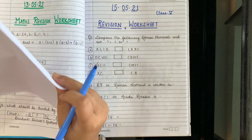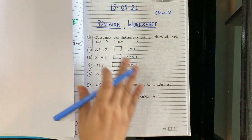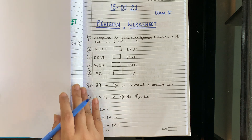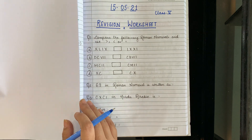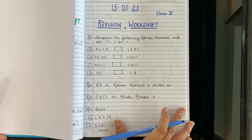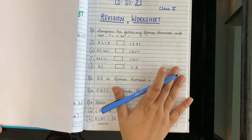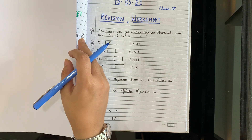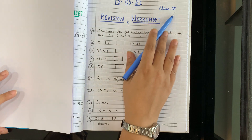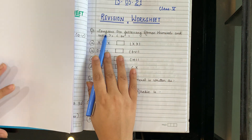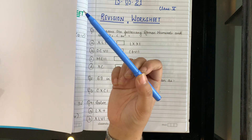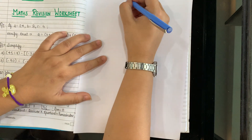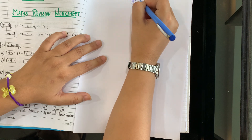So let us do a revision today — the entire revision. We will practice it today. This is your question paper for today for revision. Let us start the question paper. Take out your sketch pen to write the heading, your black pen to write the questions, and the blue pen to write the solutions. Take one A4 sheet to do the rough work. Alright?